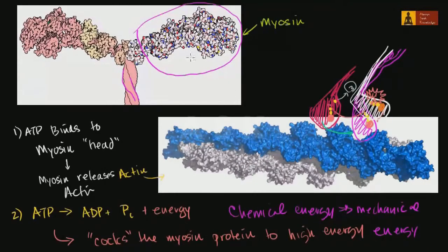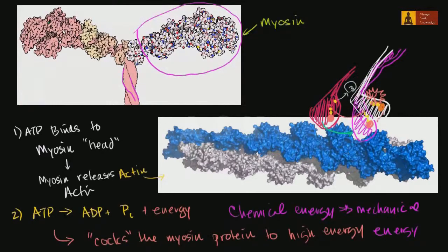In the last video, we learned how myosin, and myosin-2 in particular — when we say myosin-2, it actually has two of these myosin heads and their tails are intertwined with each other — how myosin-2 can use ATP to essentially pull an actin filament or walk up an actin filament.